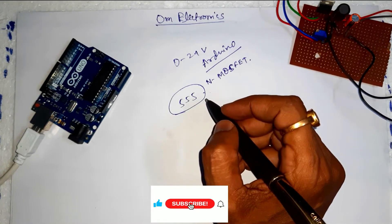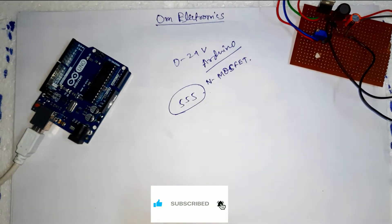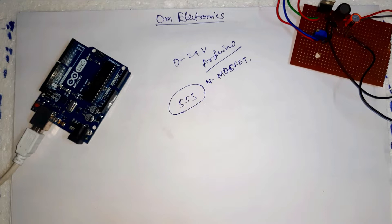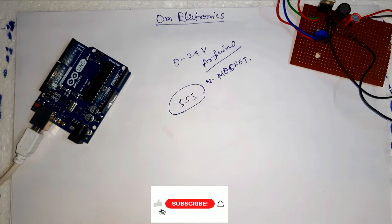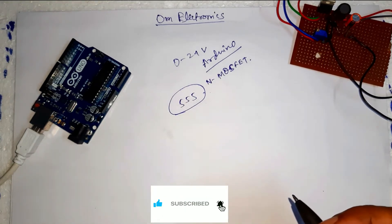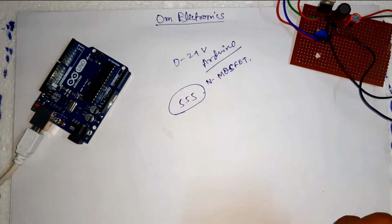The buck converter is a form of DC to DC converter that can take an input directly from a DC source such as a battery. The input could also be DC derived from AC mains via a rectifier and capacitor circuit. The AC input to the rectifier circuit could be AC at high voltage directly from the mains, or alternatively at a lower voltage via a step-down transformer.